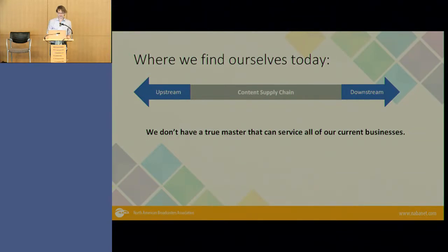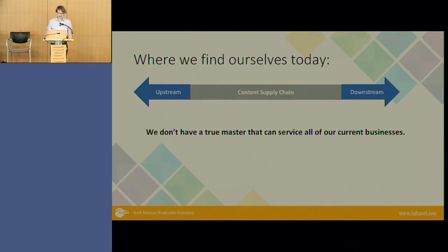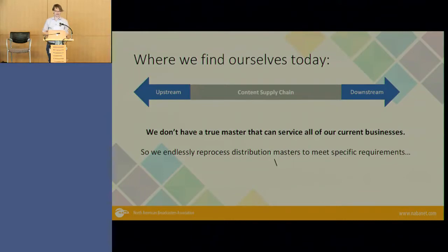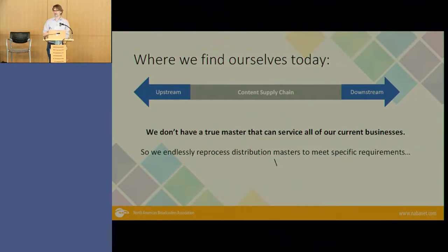Here's another one: we don't have a true master that can serve all of our current businesses. We bring a distribution master in — it's kind of a master because we create other things from it — but it's a distribution master. We go straight to our format, straight to our digital format, and there's nothing we can sit on as a trusted asset to repurpose. So we endlessly reprocess distribution masters to meet specific requirements: this person needs 23.98, that person needs 29.97, this person needs HD, that person needs SD. Constantly going through it, and if there was anything wrong with that master when it came in, we fix it over and over and over again.